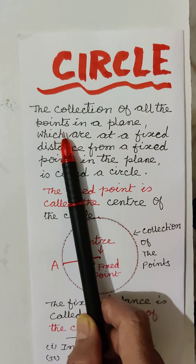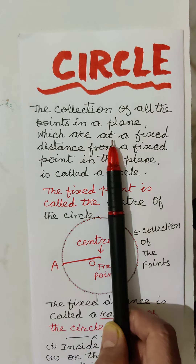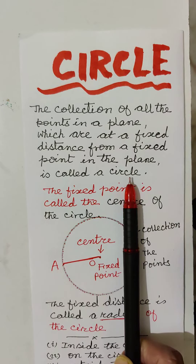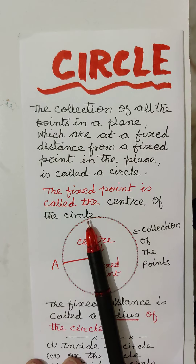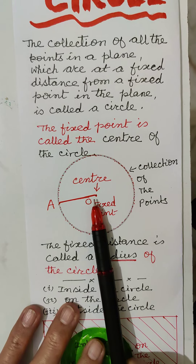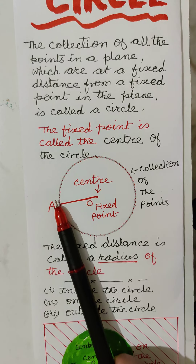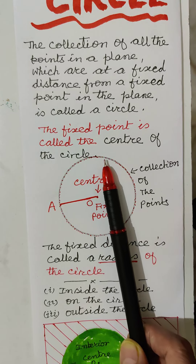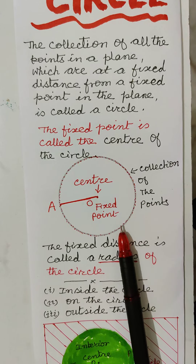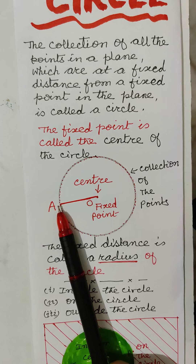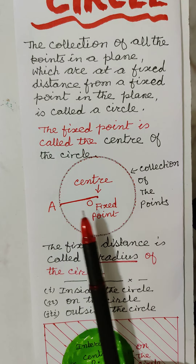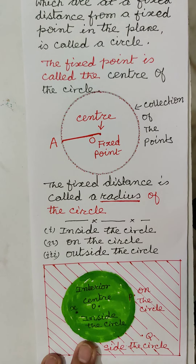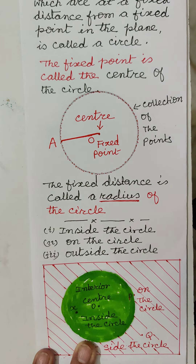The collection of all the points in a plane which are at a fixed distance from a fixed point in the plane is called a circle. The fixed point is called the center of the circle — here it is point O. The locus of all points at fixed distance OA around this fixed point forms the circle. This fixed distance OA is called the radius of the circle.